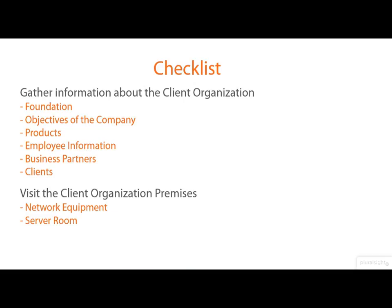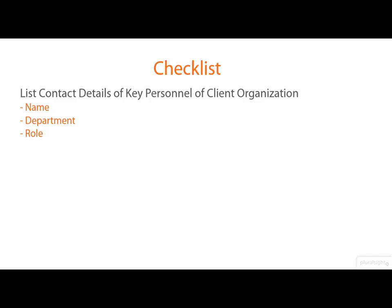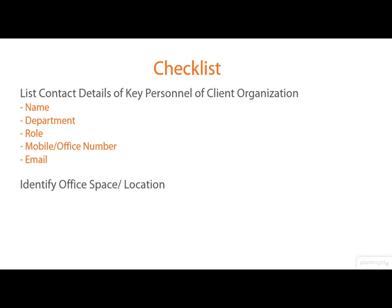The team needs to gather the contact details of key personnel and emergency personnel who will be appointed as being in charge of the project. The details should include the name of the employee, the employee's department, their role, their mobile or office number, and their email address. After that, inspect the area where the testing team will work and choose a location that is near to the network equipment room. The location should have easy access to restrooms and should have restricted access to other employees of the client organization.